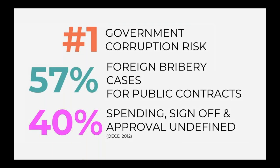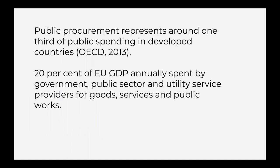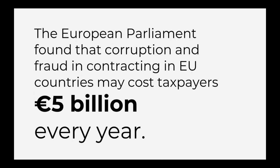Public procurement is also the government's number one corruption risk. 57 percent of foreign bribery cases for public contracts involved public procurement. In OECD countries, up to 20 percent of their budget is used in public procurement, and the European Parliament found that corruption and fraud cost European economies five billion euros every year.